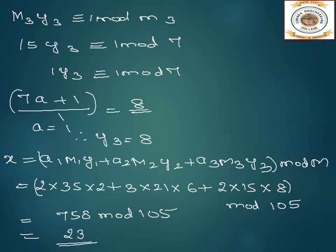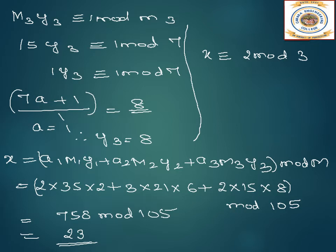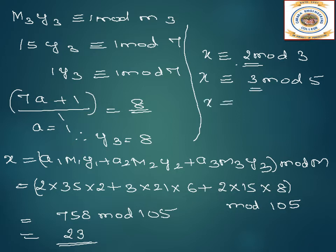So x equals 23. We substitute 23 into the original equations to verify. First: 23 mod 3 — 7 times 3 is 21, remainder is 2. So this gives 2, satisfying x ≡ 2 mod 3. Next: 23 mod 5 — 5 times 4 is 20, remainder is 3, satisfying x ≡ 3 mod 5. And: 23 mod 7 — 3 times 7 is 21, remainder is 2, satisfying x ≡ 2 mod 7. All three conditions are satisfied. This is how we work out a problem using Chinese remainder theorem.